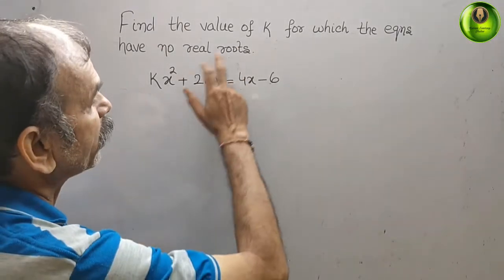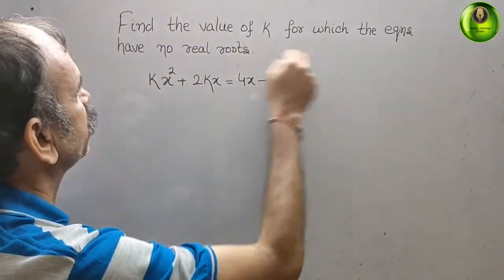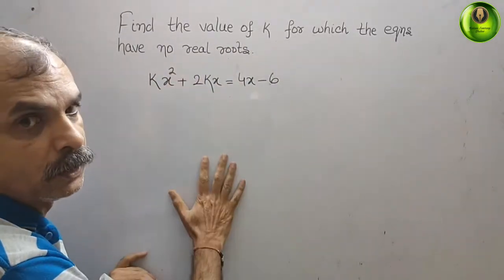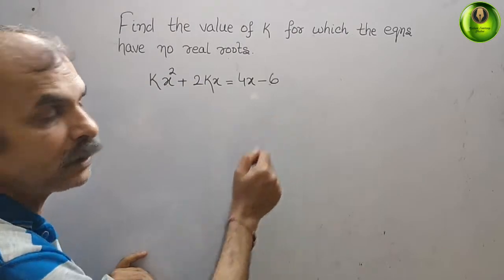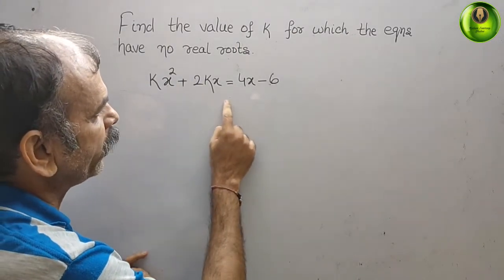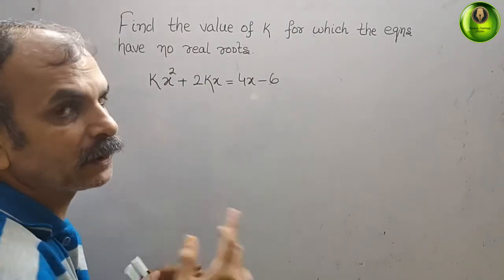Your question is, find the value of k for which the equation has no real roots. So this is the equation: kx² + 2kx = 4x - 6.